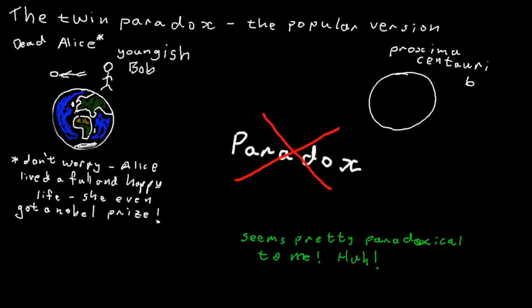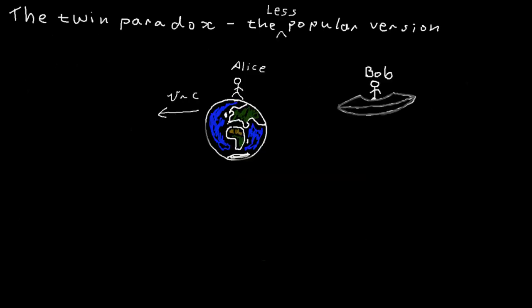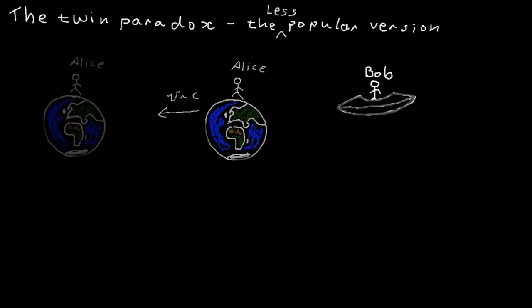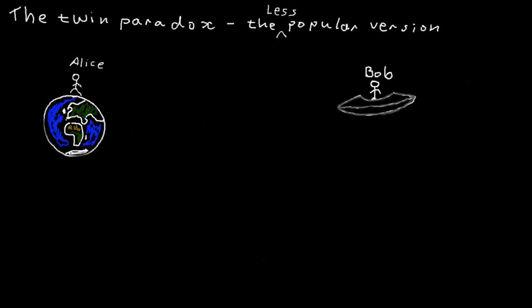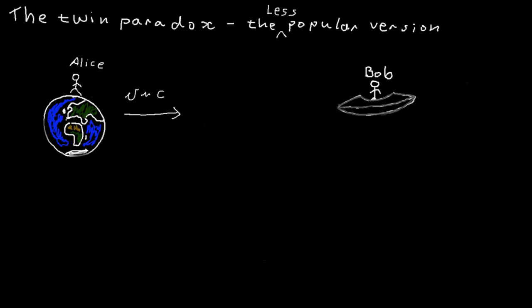But this is not the paradox. The paradox is that if velocity is relative, then why can it not be said that Alice and the Earth travel four light years from Bob, who is stationary in his saucer. And then, when they meet again, Alice would be the younger.